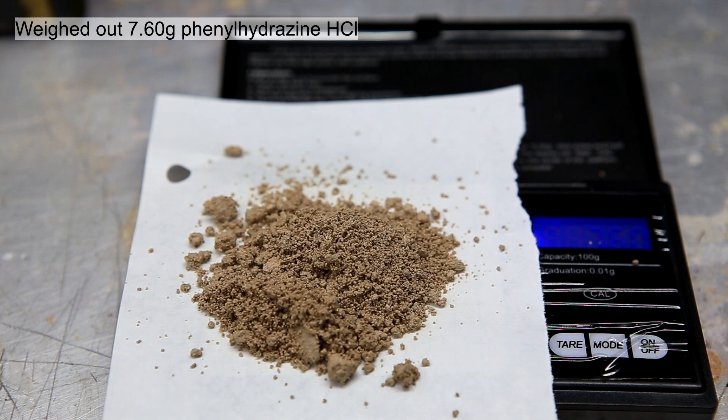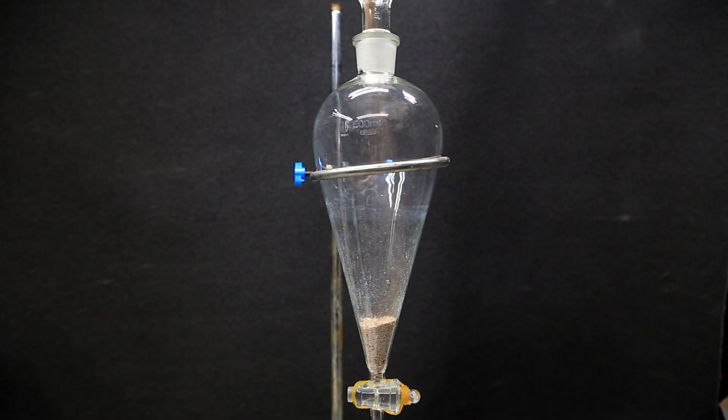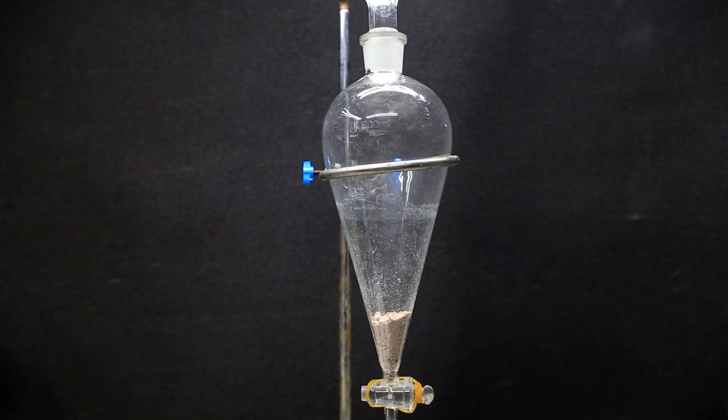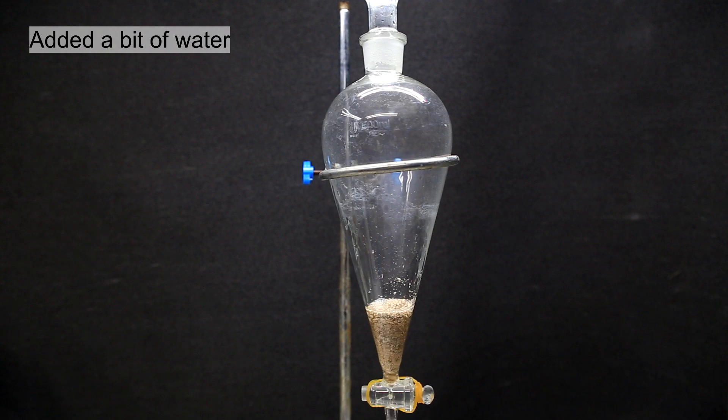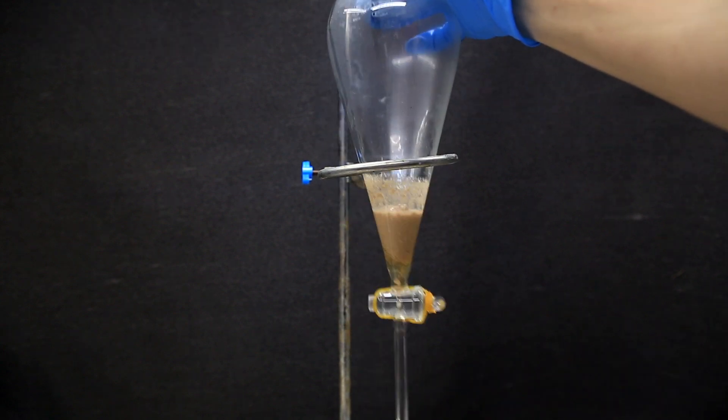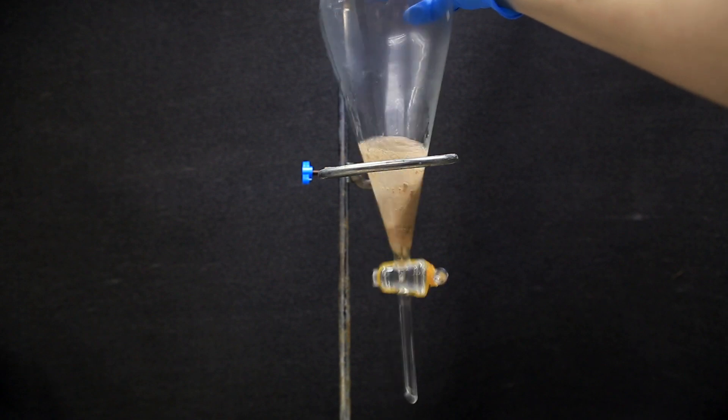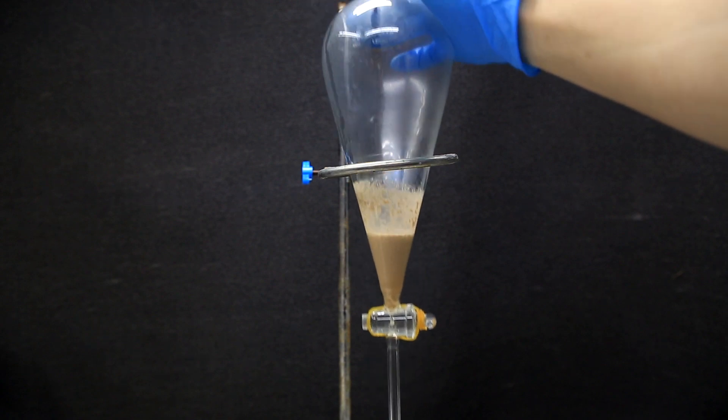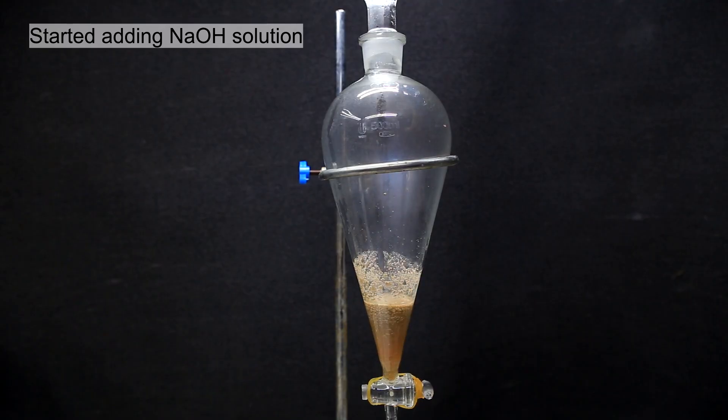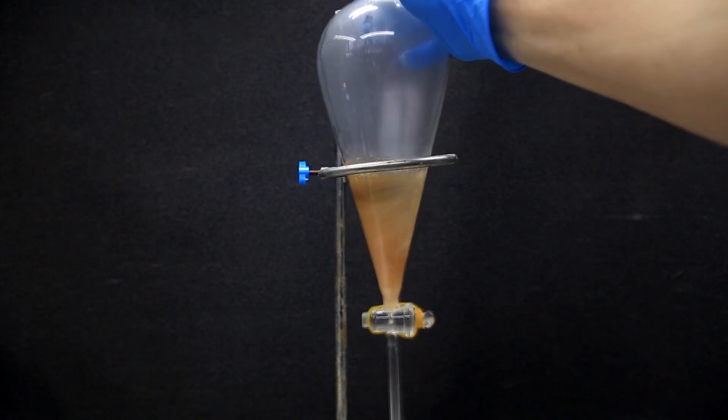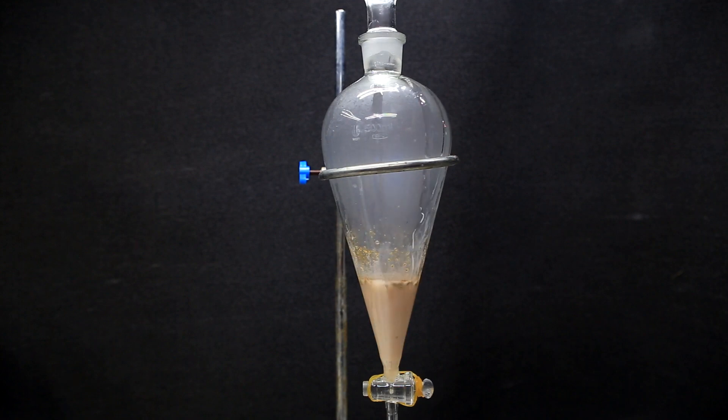I weighed out 7.6 grams of phenylhydrazine hydrochloride which is actually everything that I had left. I then directly added the powder to a separatory funnel. Once all the phenylhydrazine had been added, I poured in a little bit of water. I just show here that the phenylhydrazine hydrochloride is totally insoluble in the water. And now to this little slurry, I start pouring in the sodium hydroxide solution. I kept pouring it in and shaking until it looked like there were no more solids left.